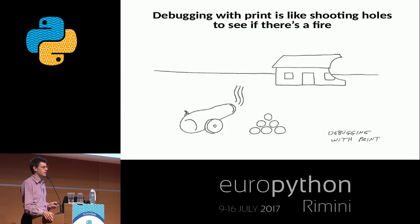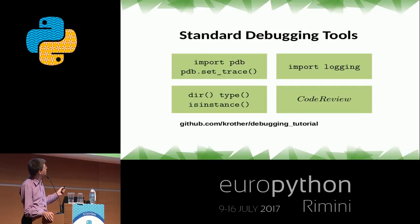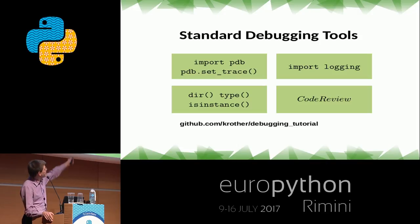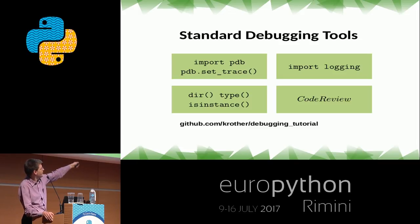It's worth keeping in mind that there are other debugging techniques: the interactive debugger, logging — with the standard logging module, which is an excellent way to produce diagnostic information. If your program is bigger than a couple of screen pages, logging becomes superior to print. You need to know your introspection functions like dir, type, isinstance, and their cousins. And I put code review here as a best practice that helps with debugging a lot.